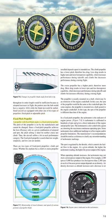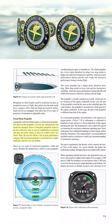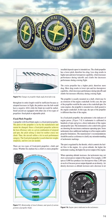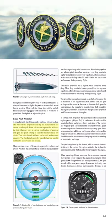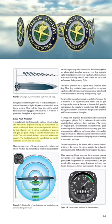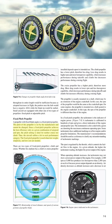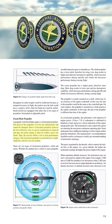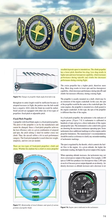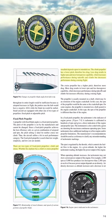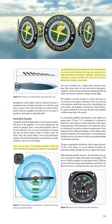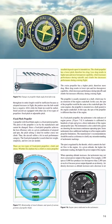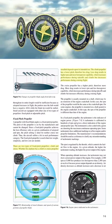A fixed pitch propeller has blades whose pitch is set by the manufacturer and cannot be changed. Since a fixed pitch propeller achieves the best efficiency only at a given combination of airspeed and RPM, the pitch setting is ideal for neither cruise nor climb. The fixed pitch propeller is used when low weight, simplicity, and low cost are needed. There are two types: climb and cruise. The climb propeller has a lower pitch, therefore less drag, resulting in higher RPM and more horsepower capability — increasing performance during takeoffs and climbs but decreasing performance during cruising flight.